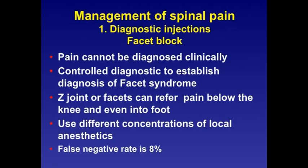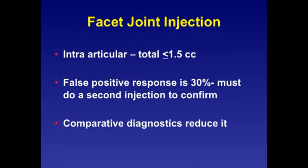Pain can be very difficult to diagnose clinically, and for that reason we often employ diagnostic injections. One of the most common is the diagnostic facet joint injection, which has a false negative rate of about 8%, meaning a second confirmatory injection is typically necessary. It is advised to use different concentrations of local anesthetics with different durations of time. Intra-articular facet joint injections themselves have about a 30% false positive response, so a second injection typically has to be performed, which reduces the diagnostic value.